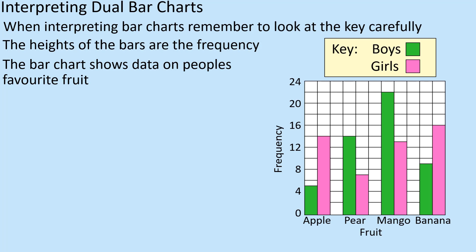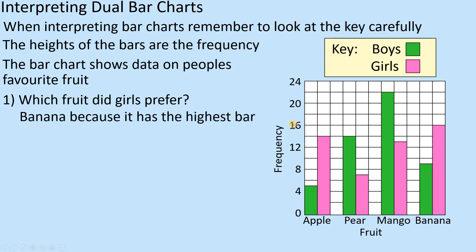The bar chart shows data on people's favourite fruit. Question: which fruit did girls prefer? So we've got to figure out which bar is for girls first - girls are the pink bar in this case. The biggest pink bar is banana, which has 16. So girls prefer banana because it has the highest bar.